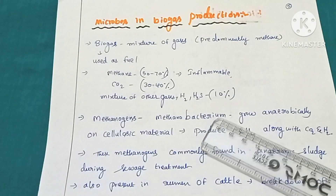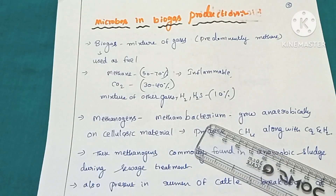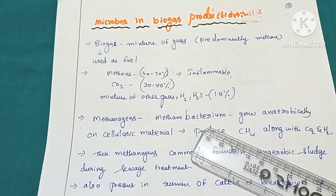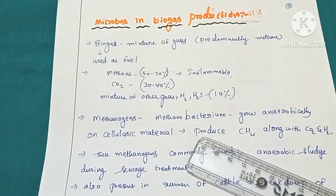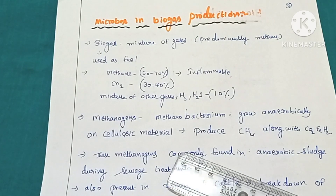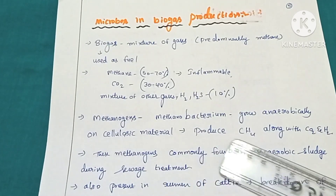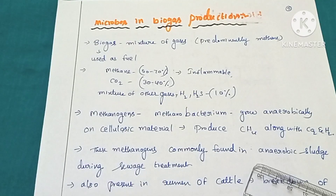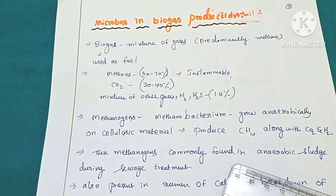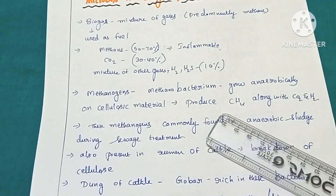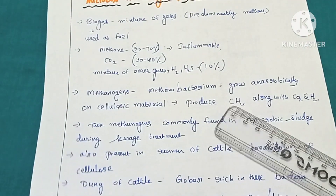If methanogenic bacteria are subjected to oxygen, they will die — they can survive only in the absence of oxygen, hence they are called anaerobic organisms. These methanogenic bacteria produce methane along with carbon dioxide and hydrogen. Methanogens are commonly found in anaerobic sludge digesters.